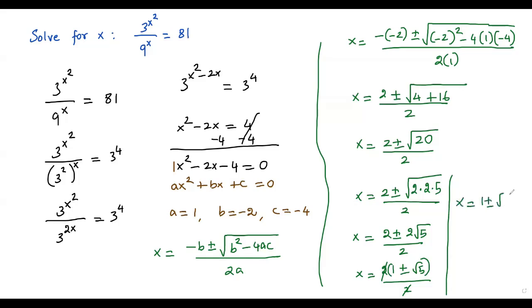So we get two values: x equals 1 plus square root of 5, or x equals 1 minus square root of 5.